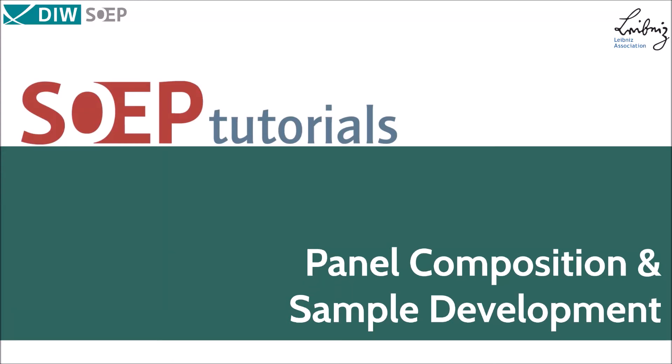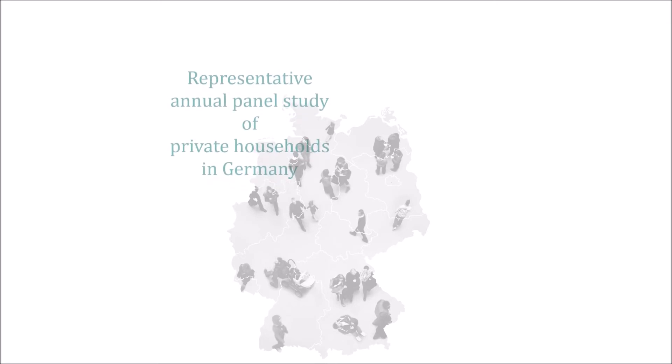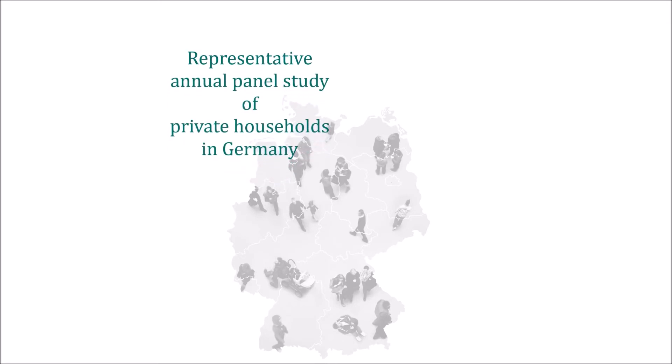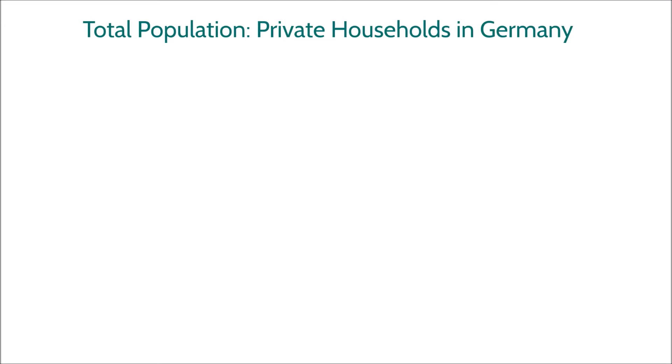Welcome to the SUP tutorial series. In this tutorial we will get to know the composition of the active panel and have a look at the different types of samples which have been added over the years. As you may know from previous tutorials, the SUP is a representative annual panel study of private households in Germany. The total population therefore are German households.